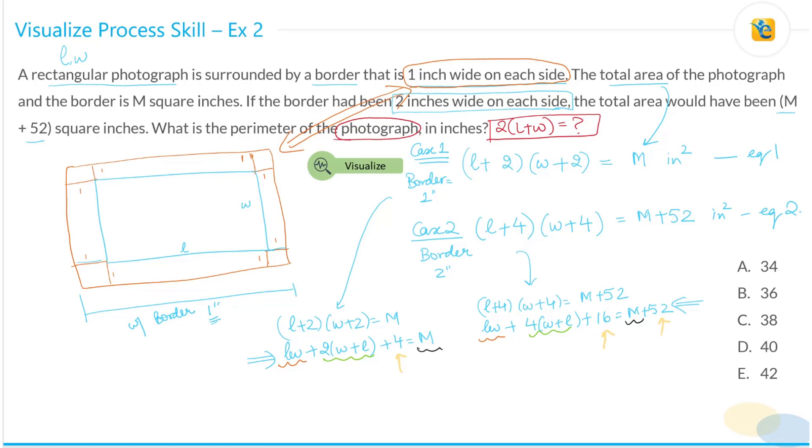So what you can do is you need to make such observations. And now what you should do is you should subtract these two. If you subtract these two, you will get rid of LW for sure. So if you subtract these two, what you end up getting is twice W plus L plus 12 is equal to 52. What you end up getting is twice L plus W is equal to 40 inches. So the correct answer over here is choice D.